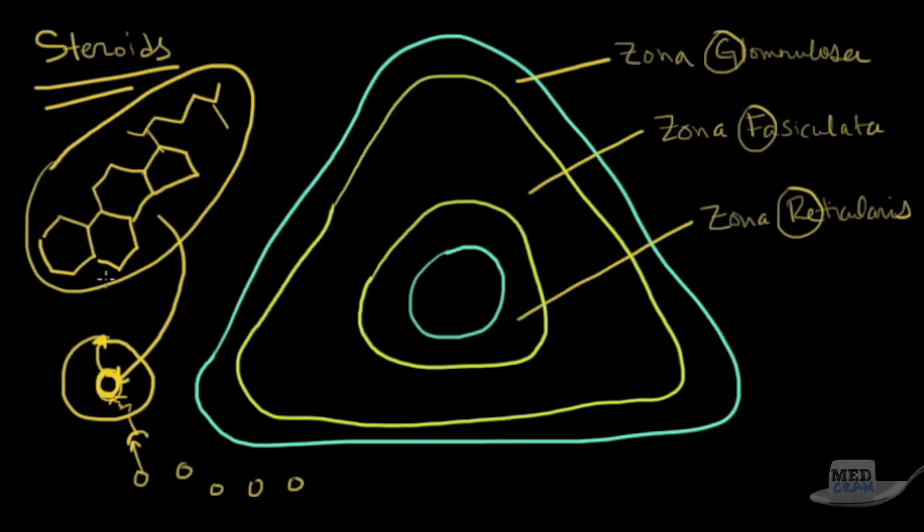These hormones actually go into your cell's nucleus. They cause transcription of different proteins, which takes a long time. You have to have transcription, then it goes to the rough endoplasmic reticulum, Golgi apparatus, and then gets exported.